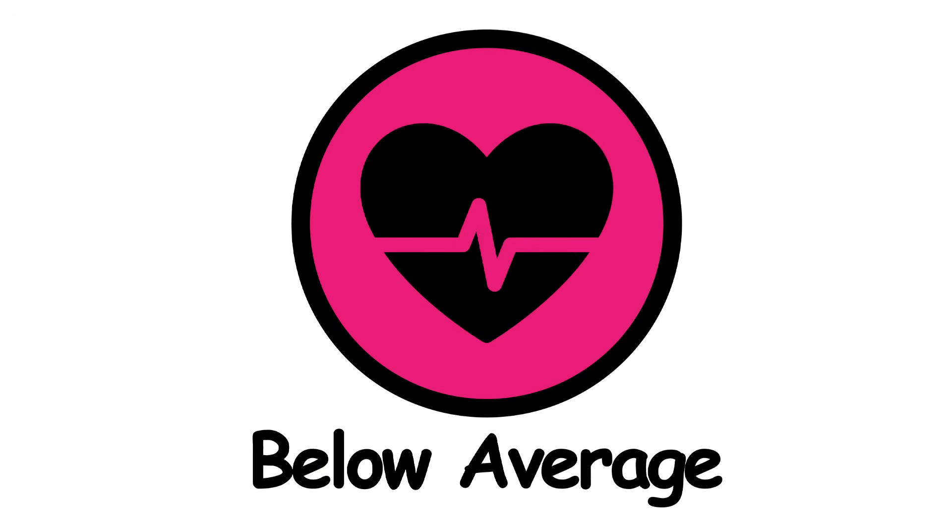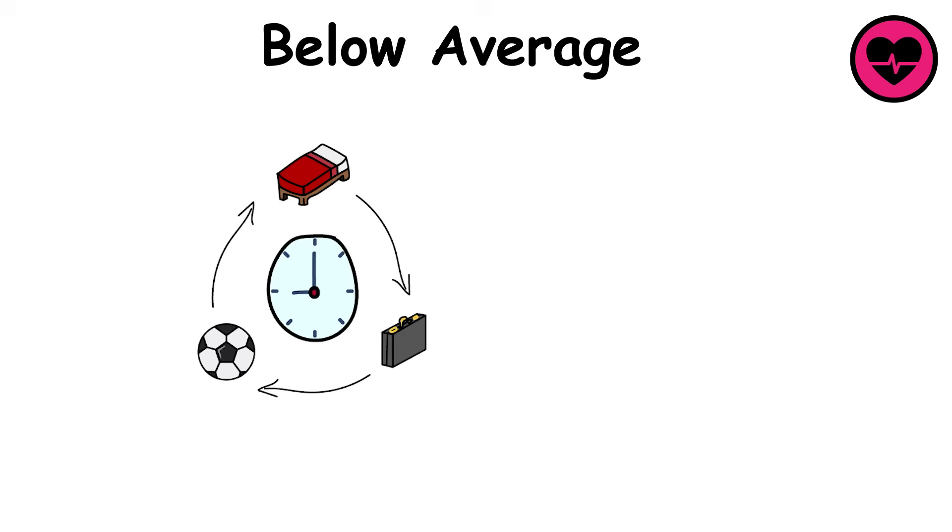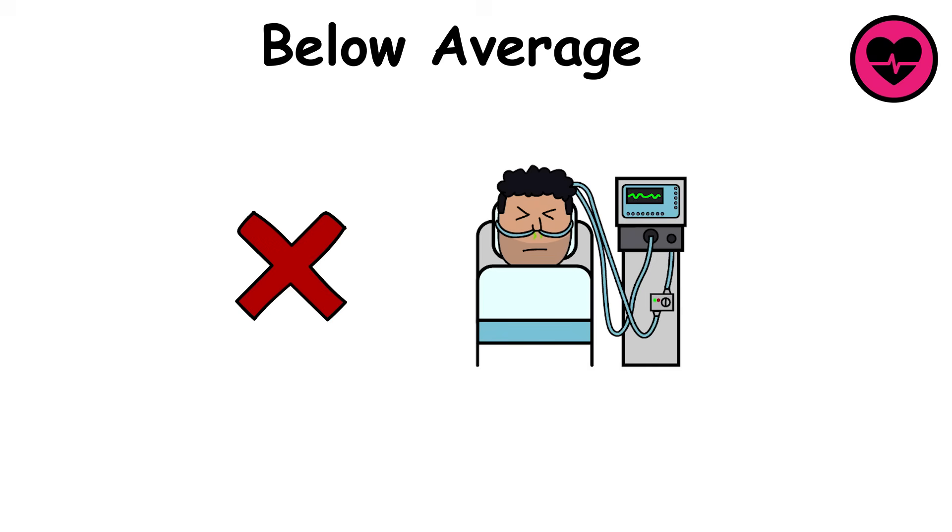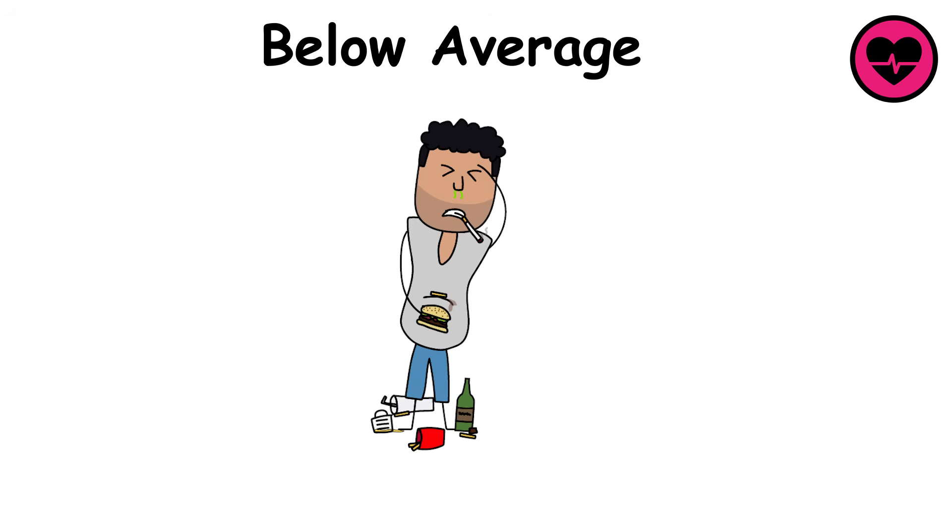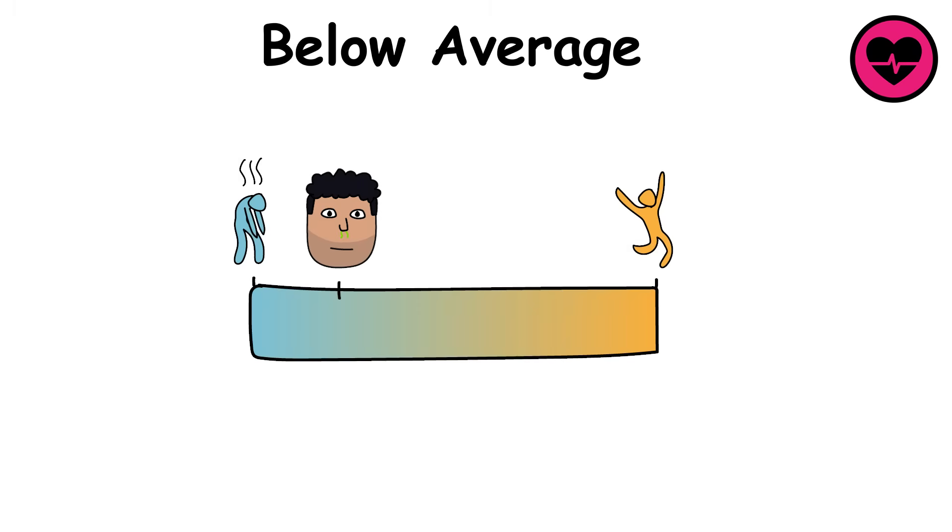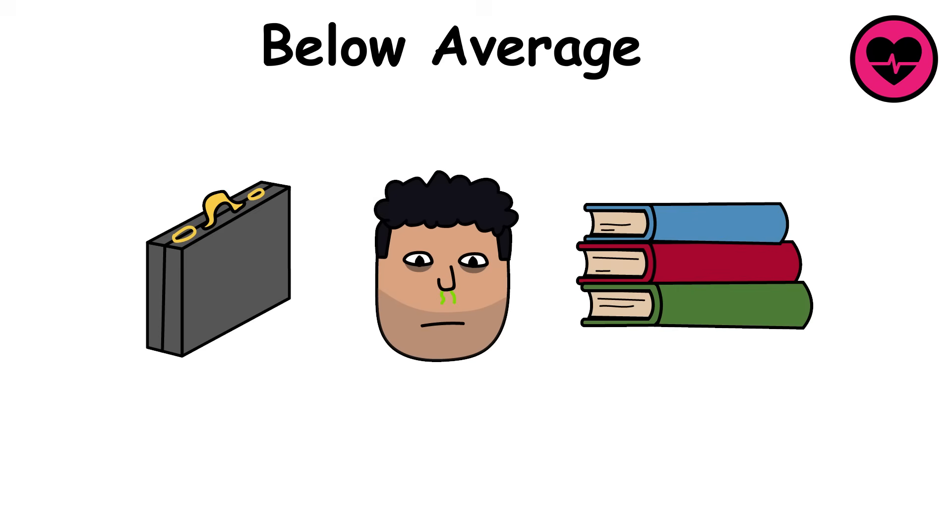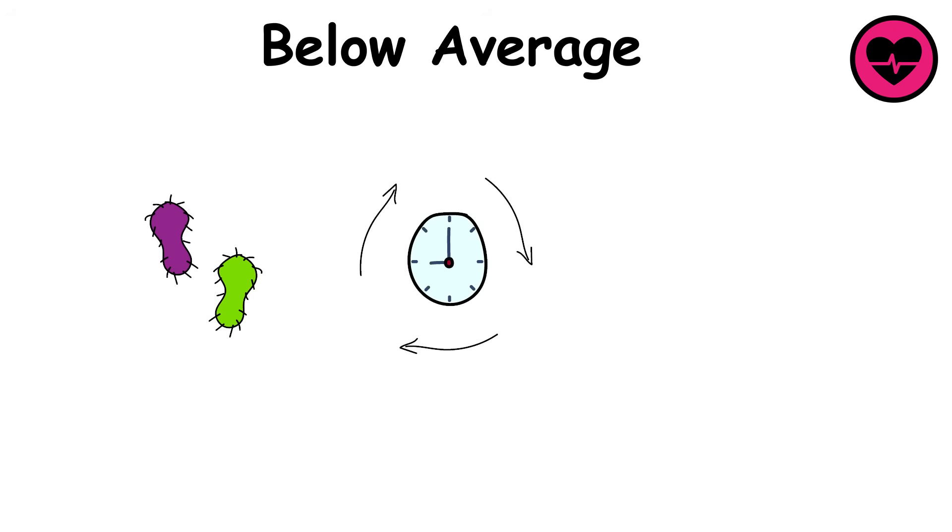Below average health. Below average health is the point where daily habits drag the body down. People at this level may not be seriously ill, but choices like poor diet, lack of exercise, smoking, or excessive drinking steadily wear on them.